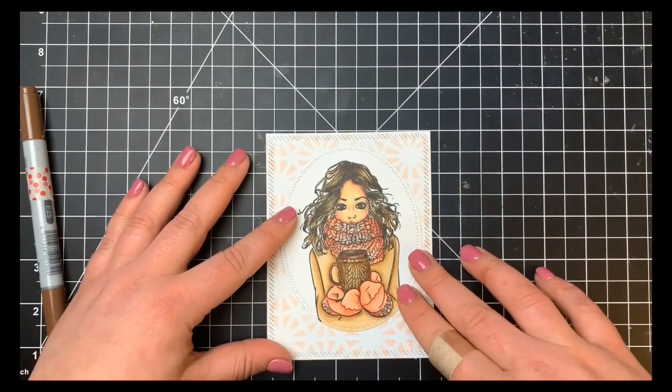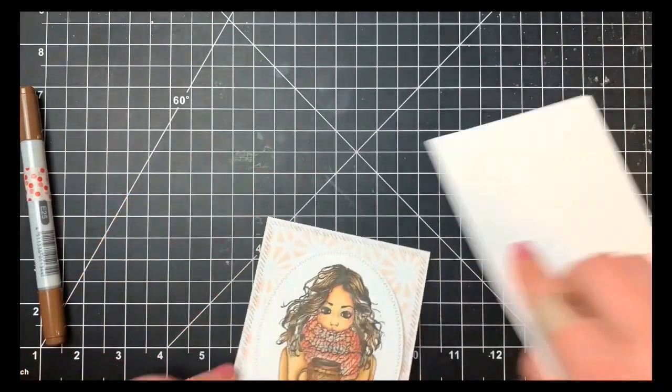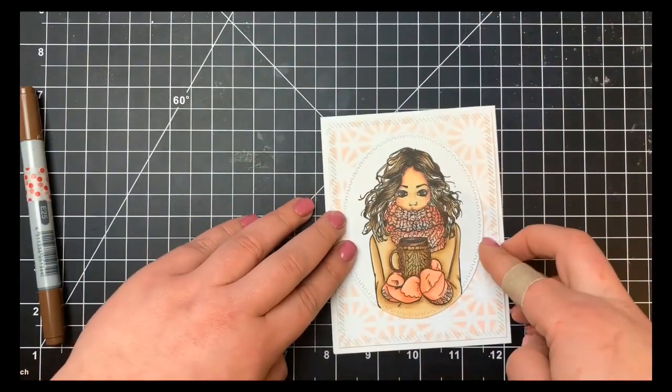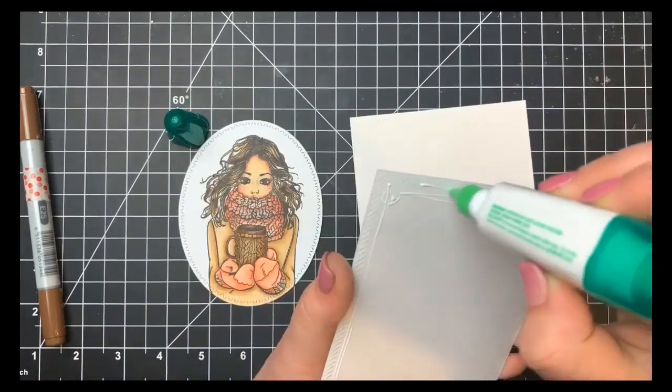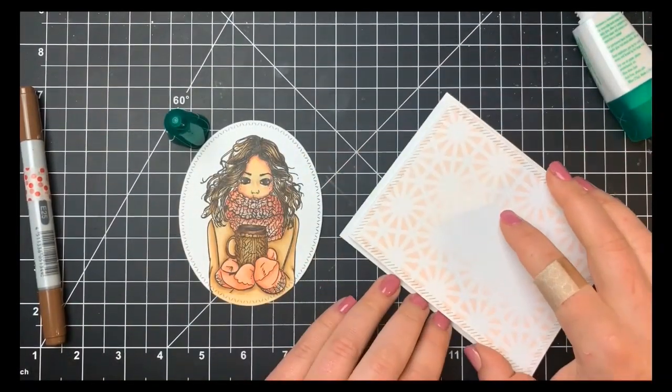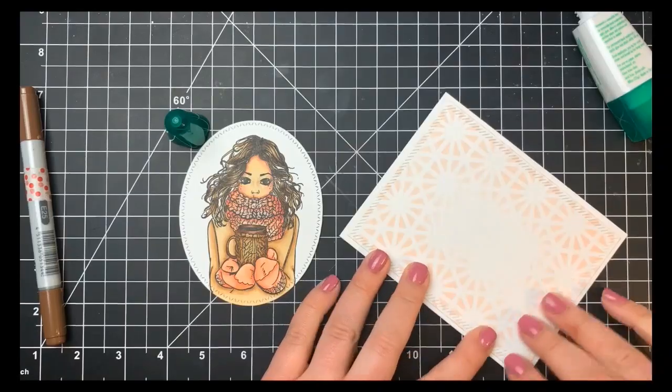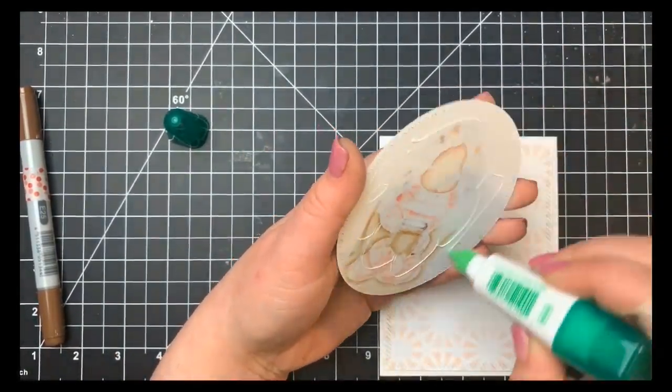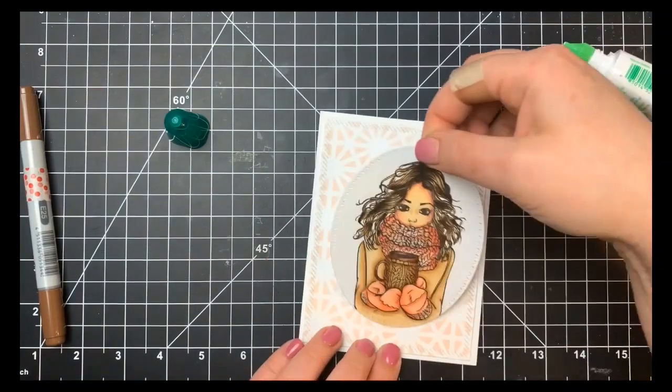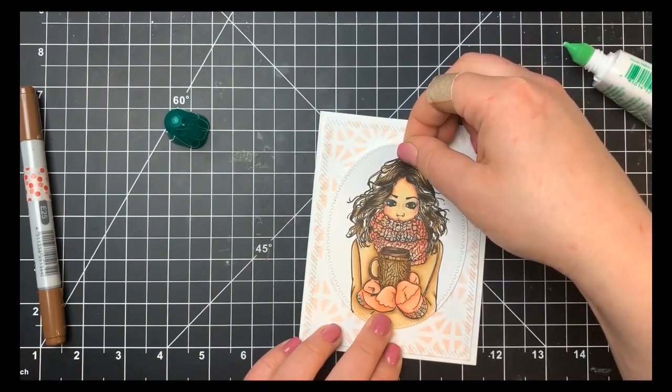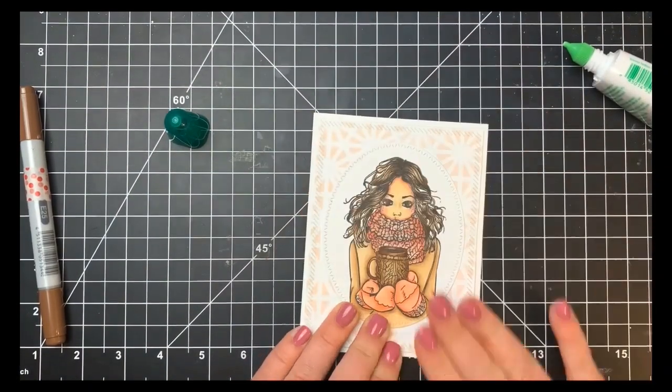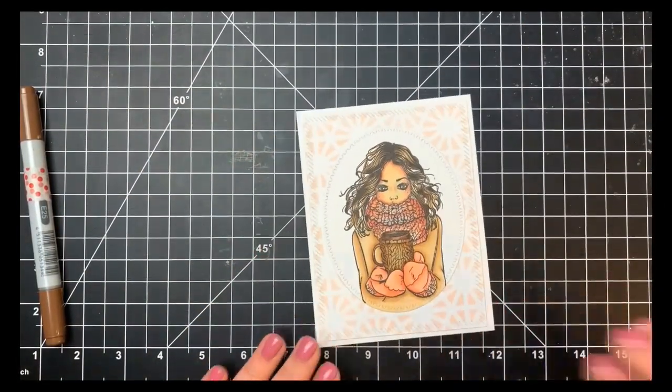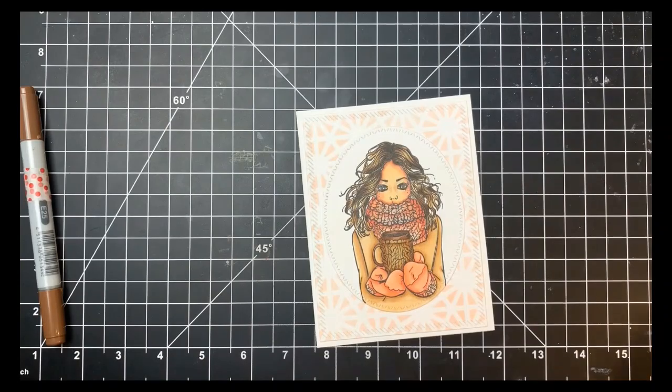Like I said, guys, this is pretty simple. All I'm going to do is adhere this all together. I'm using my Tombow Mono Multi Glue to first adhere the main panel that we used the stencil on to my A2 size card base, just leaving a little frame around the outside of the card base itself. Then I'll use that same glue to adhere my oval down right to the center, covering up that blank area that I didn't bother to use that distress ink on.